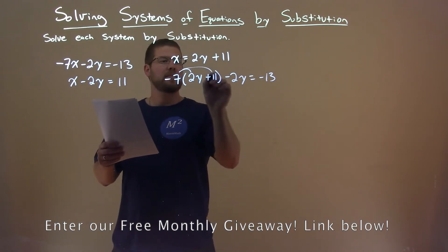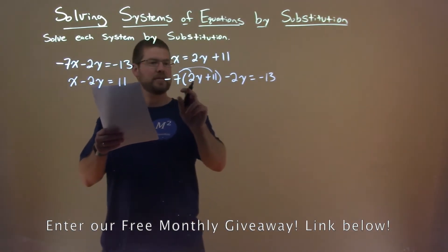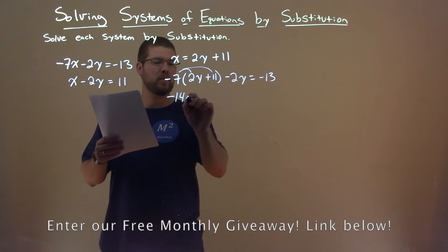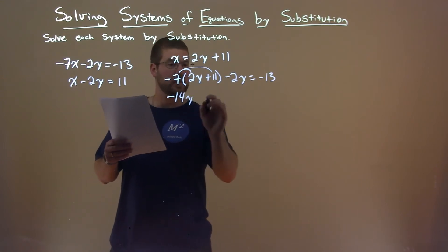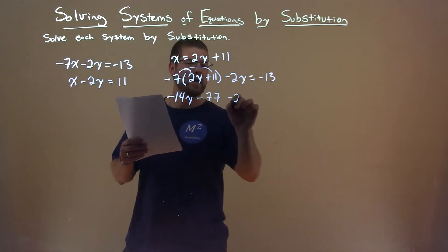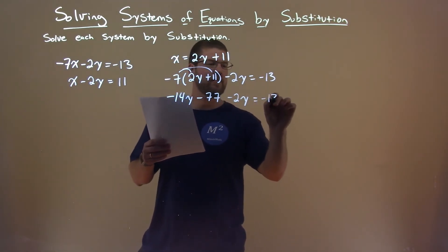We distribute the minus 7 to both parts. Minus 7 times 2y is minus 14y. Minus 7 times 11 is minus 77. And a minus 2y here, and then negative 13.